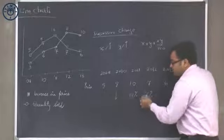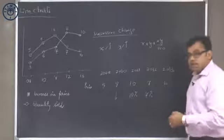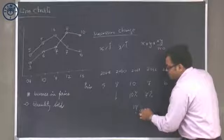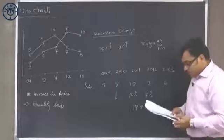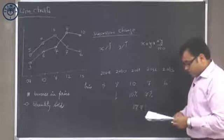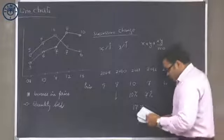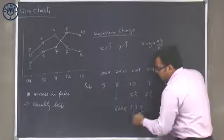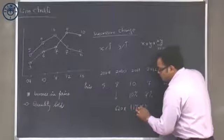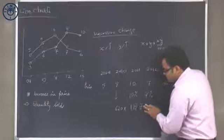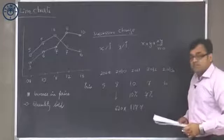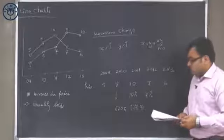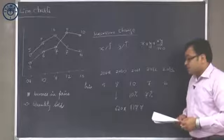So the net increase will be 10 plus 7, 17 plus 0.7, so the net increase is 17.7 percent. If the net increase is 17.7 percent on a base of 620, so the final value will be 620 into 1.177. Now 1.177 on a base of 620: 620 plus 10 percent is 62, so that will become 682.